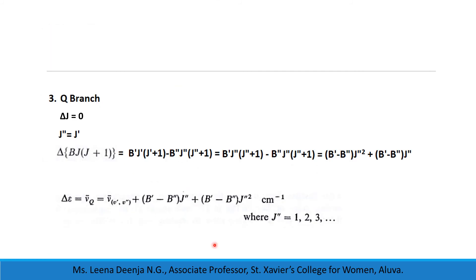Next we consider the Q branch. For Q branch, ΔJ = 0, meaning J'' = J'. The change in rotational energy equals B'J''(J''+1) − B''J''(J''+1), which simplifies to (B'−B'')J''² + (B'−B'')J'', where J'' can take values 1, 2, 3, etc. We know that transition from lower J=0 to upper J=0 is not possible. Therefore, ν̄_Q = ν̄(v', v'') + (B'−B'')J''² + (B'−B'')J''.